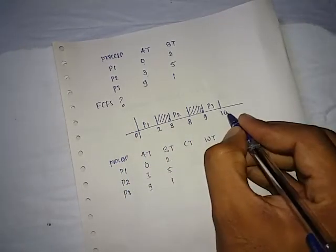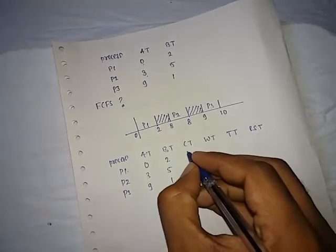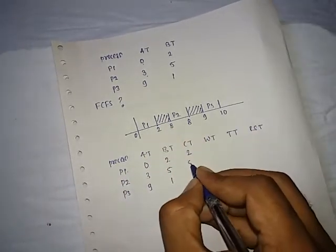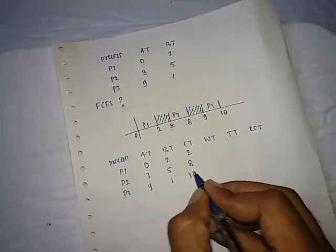Completion time can be calculated from this Gantt chart. For the P1 process, it is completing at 2 time interval, that's why the completion time is 2. For P2 process, it is completing at 8, so its time interval is 8. And for P3, it is completing at 10, so it's 10.